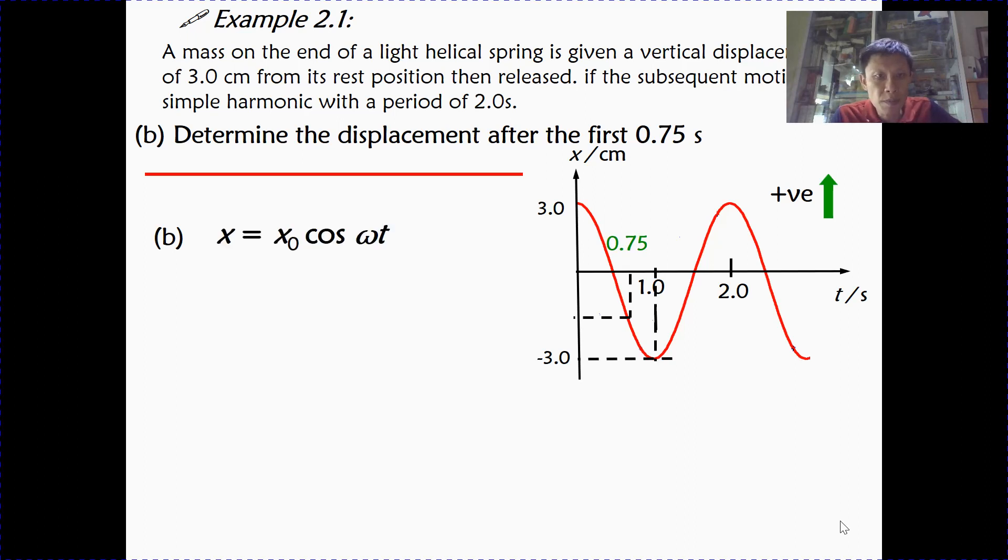So if you want to use equation, let x be x naught cosine omega t. We use cosine like I said before, because the starting position at time t equals 0 is at the amplitude position. So the amplitude is 3. Omega is 2π over period, so the period is 2 seconds. And we are looking for the displacement after a time of 0.75 seconds. So the relevant substitution is as shown.